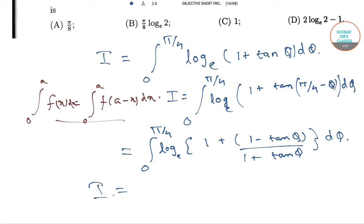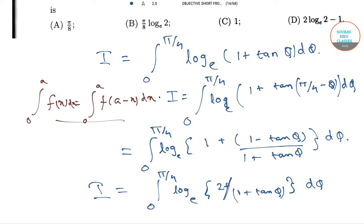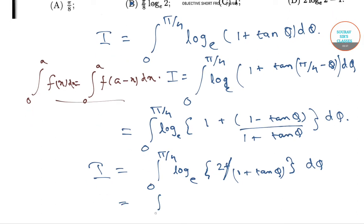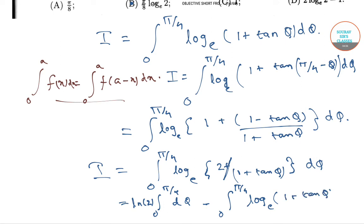So we get i is equal to integration from 0 to π/4 of log base e (2 / (1 + tan θ)) dθ, which is equal to integration from 0 to π/4 of ln 2 dθ minus integration from 0 to π/4 of log base e (1 + tan θ) dθ.